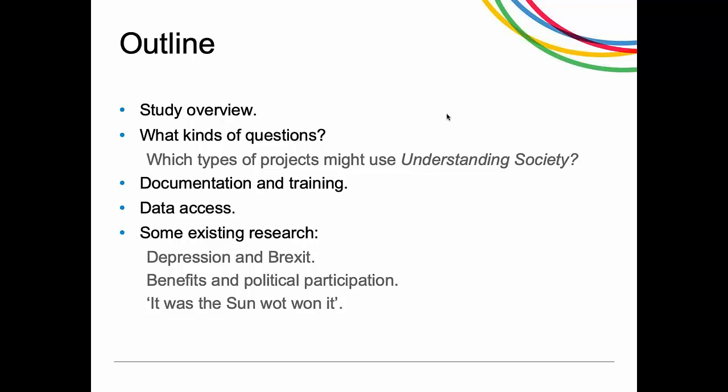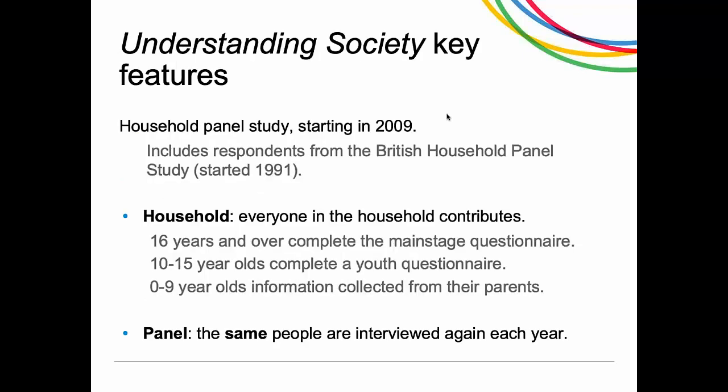Understanding Society is a Household Panel Study that started in 2009. It has also incorporated respondents from a previous Household Panel Study called the British Household Panel Study, which started in 1991. There were about 8,000 households in the British Household Panel Study in its last wave in 2008, and they were all invited to join Understanding Society in 2009. It's a household study, so everyone in the household contributes — as long as they consent.